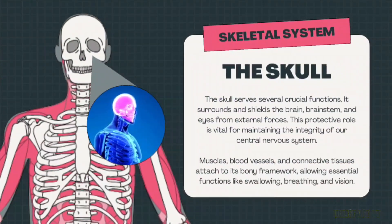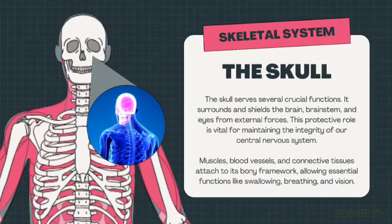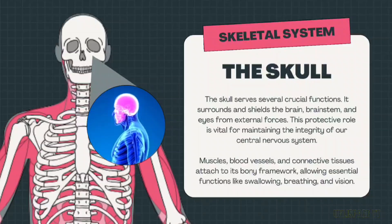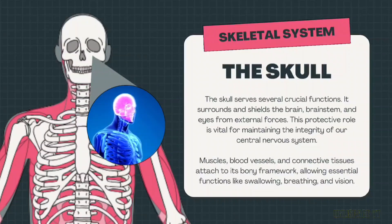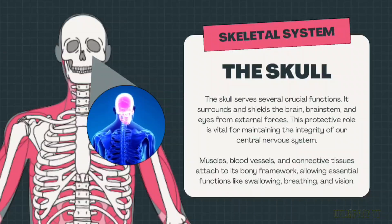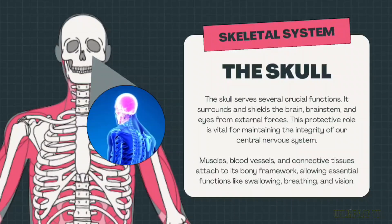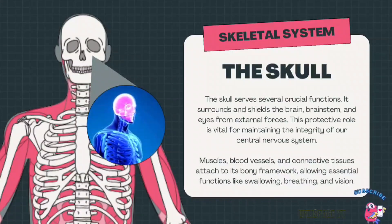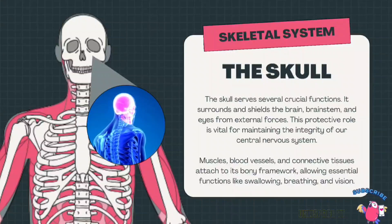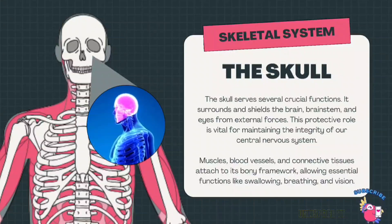The skull serves several crucial functions. It surrounds and shields the brain, brainstem, and eyes from external forces. This protective role is vital for maintaining the integrity of our central nervous system, muscles, blood vessels, and connective tissues attached to its bony framework, allowing essential functions like swallowing, breathing, and vision.